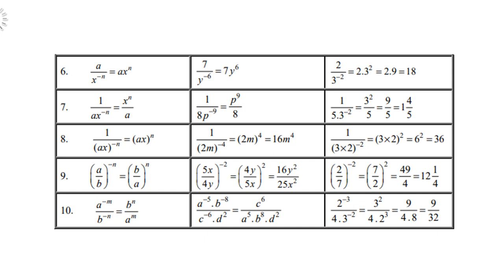Definition 7: 1 over ax to the power negative n — take note, a has no negative exponent so a stays in the denominator, but x to the power negative n goes up to the numerator. For example, 1 over 8p to the power negative 9: 8 is positive so only p to the power negative 9 goes up. In 1 over 5 times 3 to the power negative 2: only 3 to the power negative 2 goes up, giving 9 over 5, which is 1 and 4 fifths.